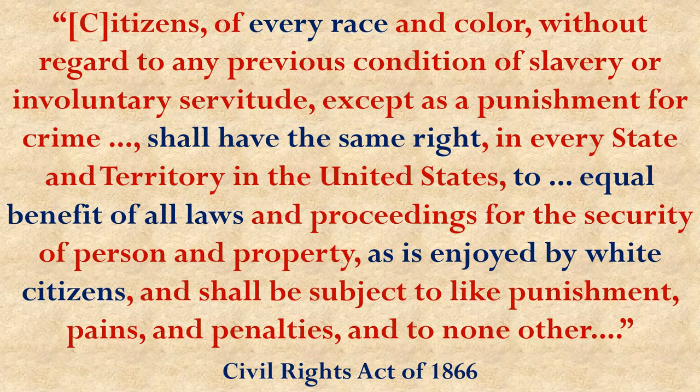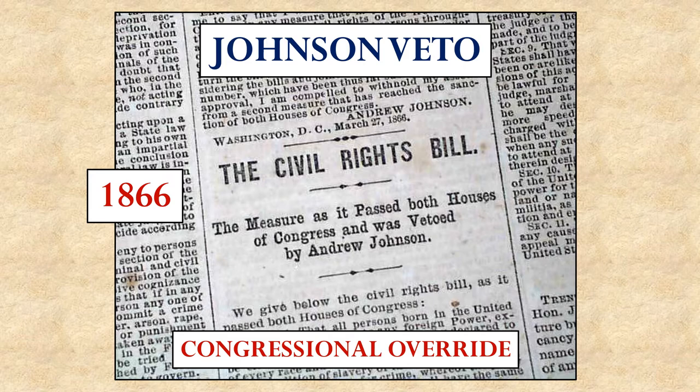One of the things the Radical Republicans did with this absolute power was pass the Civil Rights Act of 1866, requiring that every person shall have the same rights within the states and territories of the United States as though they were white. This was essentially outlawing the Black Codes. Johnson saw this as too radical a change and vetoed it, but the Radical Republicans had a supermajority and overrode his veto. They were concerned, however, that courts might declare it unconstitutional.